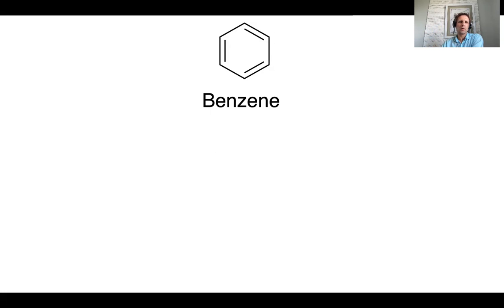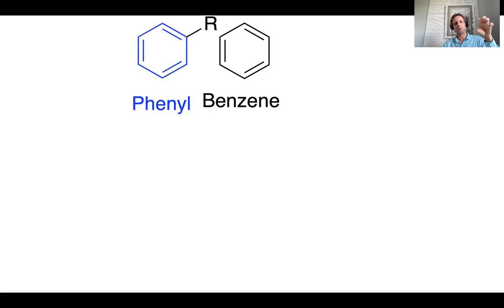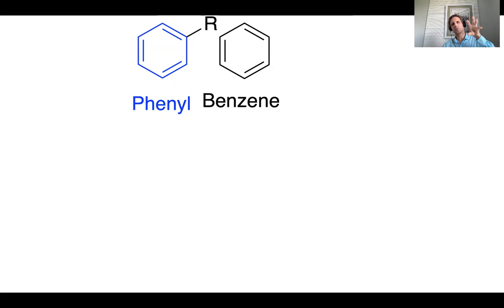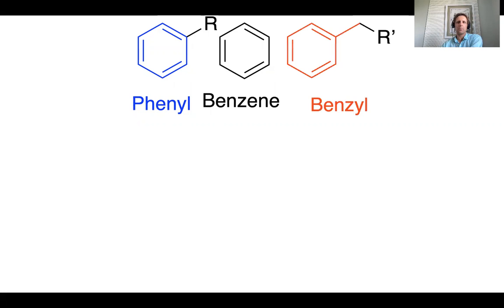If we have a benzene ring as a substituent of some kind of larger molecule, we'd be talking about a phenyl substituent. The name of a benzene ring directly attached to whatever the larger parent molecule is — we would call that a phenyl substituent.